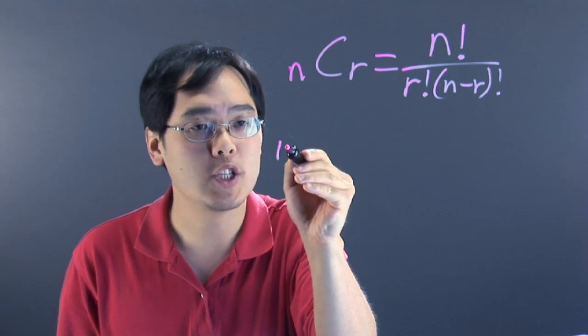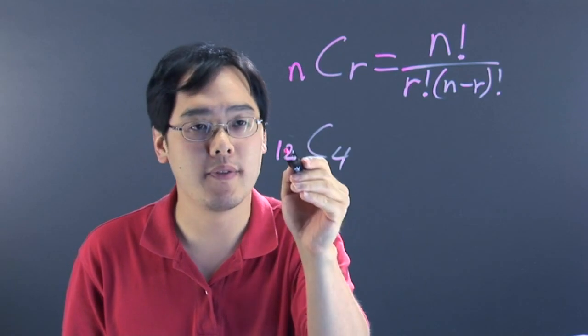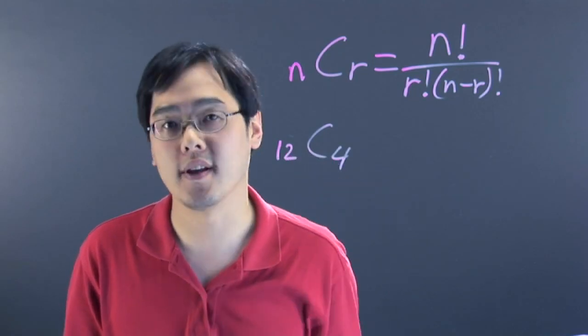Suppose you want to find 12C4. That means how many combinations do you have if you have 12 items to choose from and you're picking 4 from that pool.